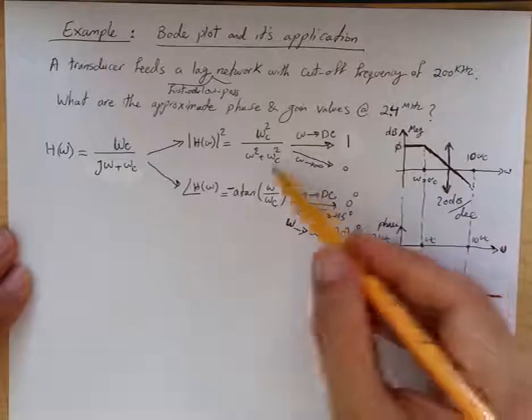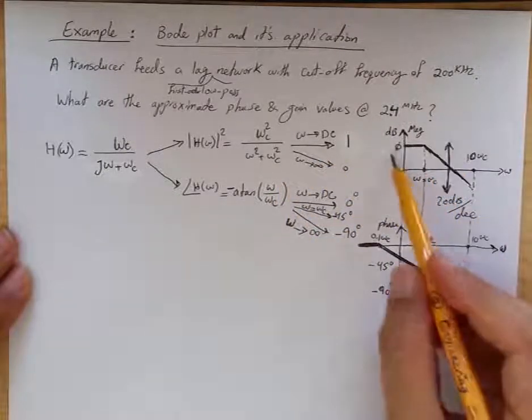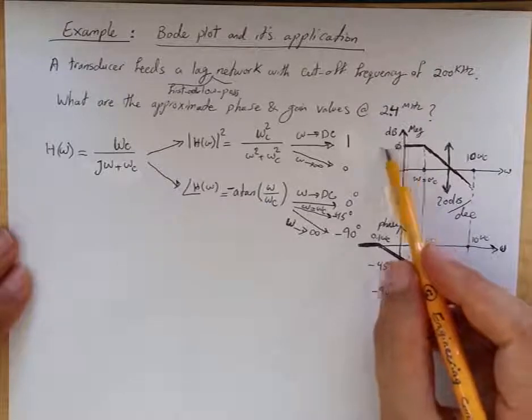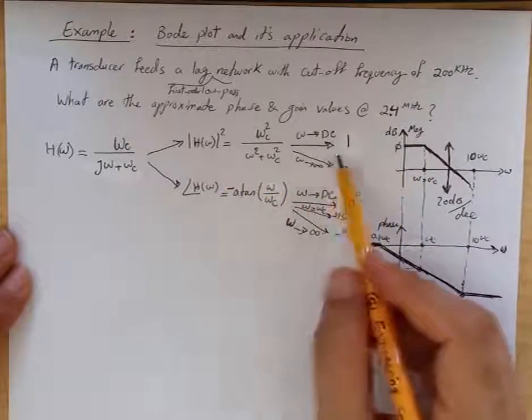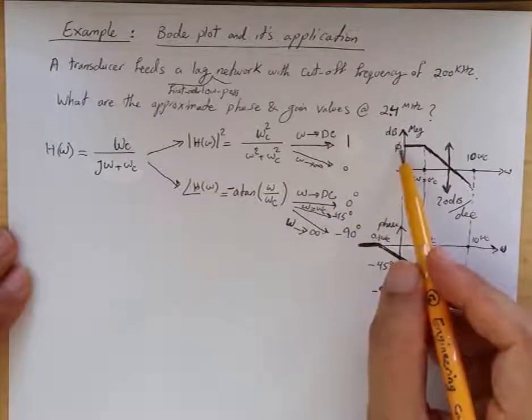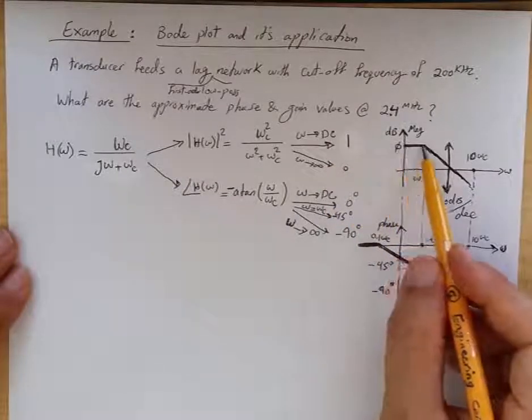From the Bode plot, we approximate this behavior like this. Initially, at DC and very low frequency, the magnitude response in dB would be 10 log 1, which is 0 dB, so it remains flat.